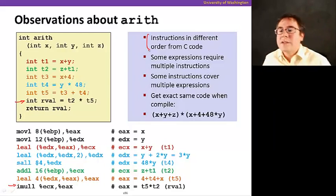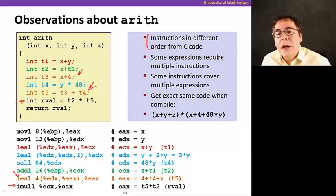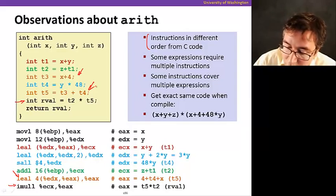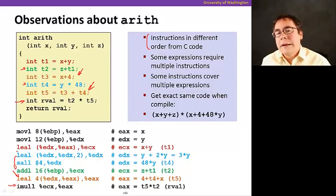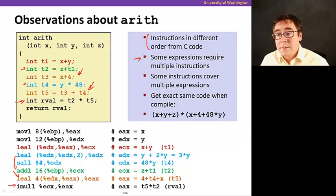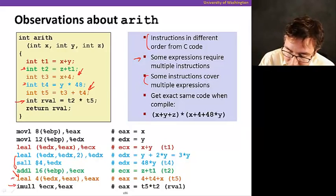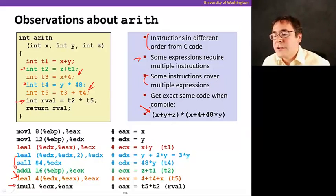So things to note here is that, note that the instructions are in a different order than what appeared in the C code. So you see like this orange instruction happens to implement and relates to these two instructions in C code, these two statements in the C code. And also, green comes before blue in C, but blue comes before green in the assembly code. And also, it's interesting to note that some expressions require multiple instructions. And some instructions, like this one that I just showed here, covers multiple expressions. And you get the same exact code when you compile this. Why is that? Because the compiler is going to have to create temporary variables anyways.